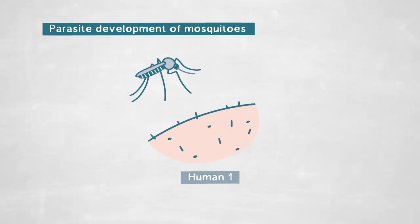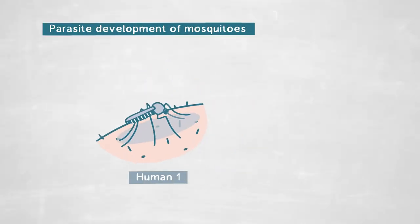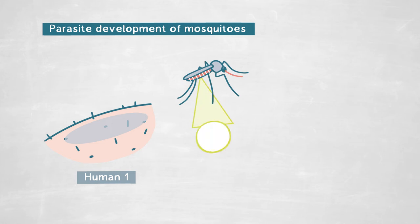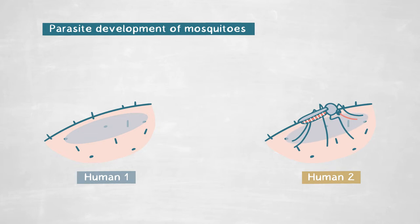A mosquito can take blood from an infected individual, develop the parasite inside during a period of three weeks, and then inject a new form of the parasite into the next human. The question we ask is: what happens in the mosquito during these three weeks, and how does it support parasite development?